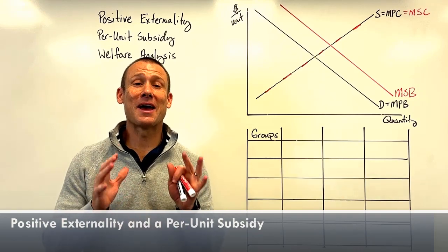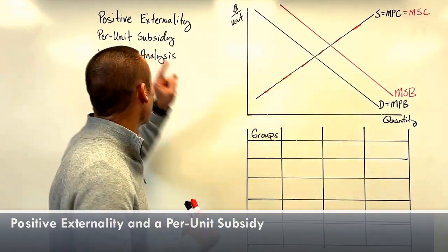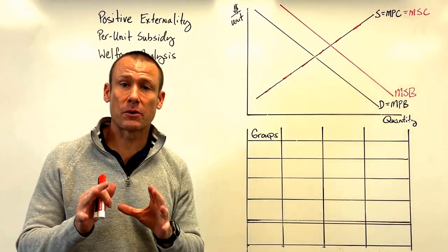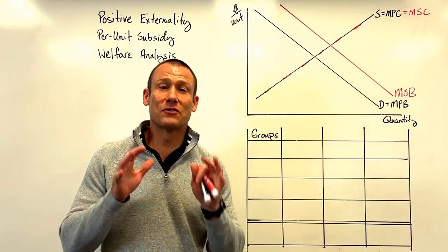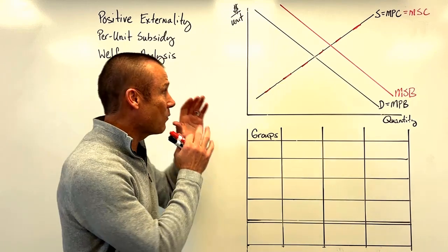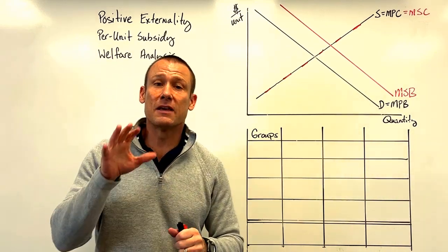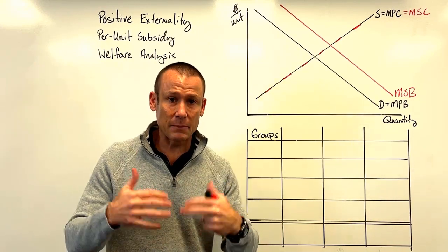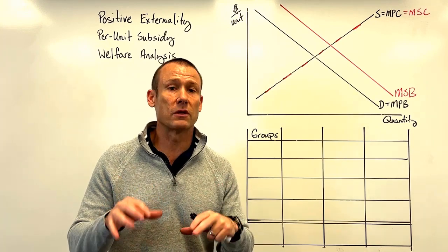Welcome everybody. We're going to be doing a positive externality analysis with a per unit subsidy — that's right, we're going to intervene with a per unit subsidy and do a welfare analysis. This is the real deal because you are really going to be tested on how well you understand this graph. This is one of the most sophisticated microeconomics welfare analyses we do in a principles or foundation class.